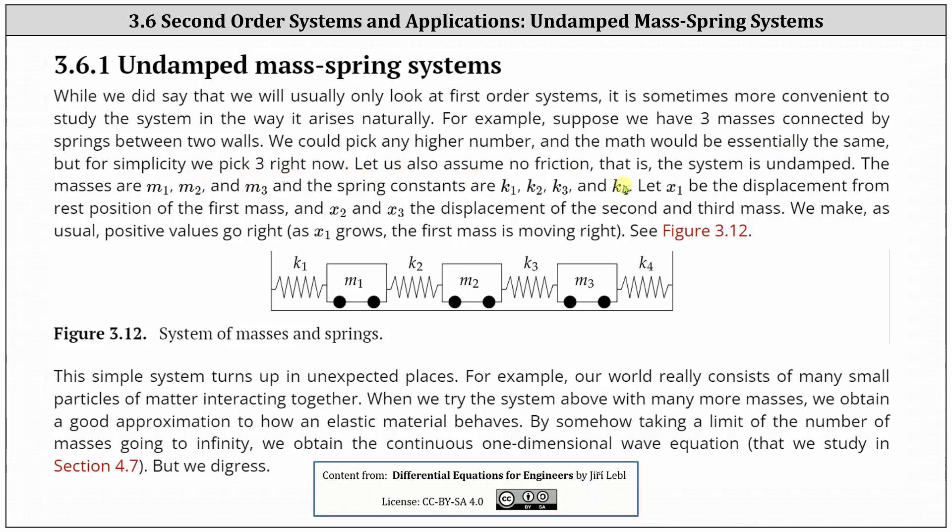Let us also assume no friction, that is the system is undamped. The masses are M1, M2, and M3, and the spring constants are K1, K2, K3, and K4.